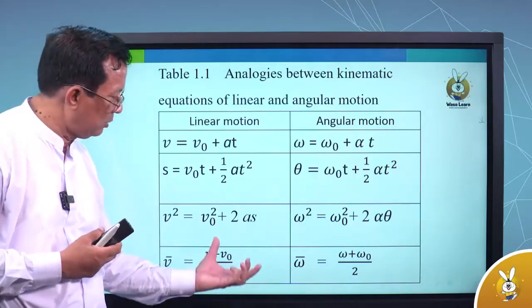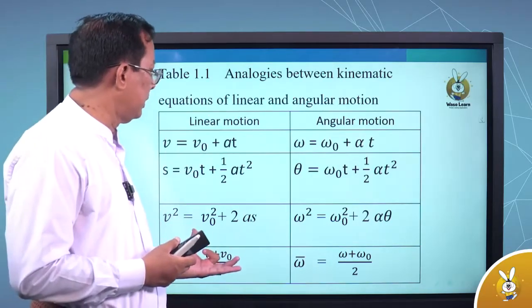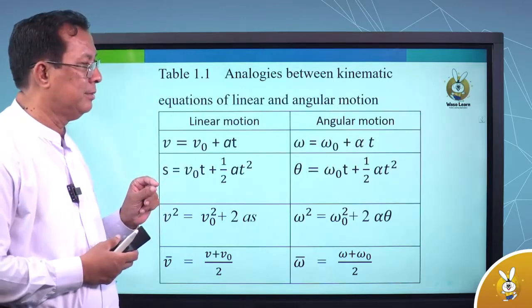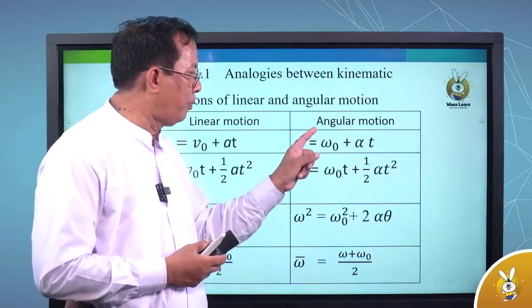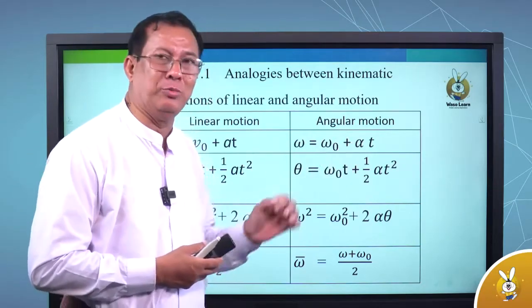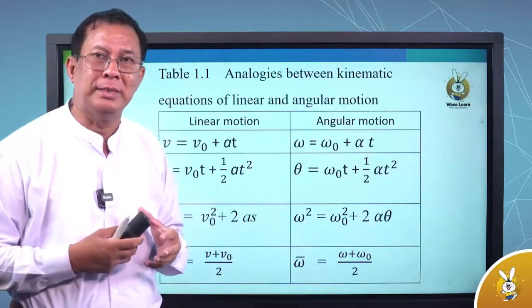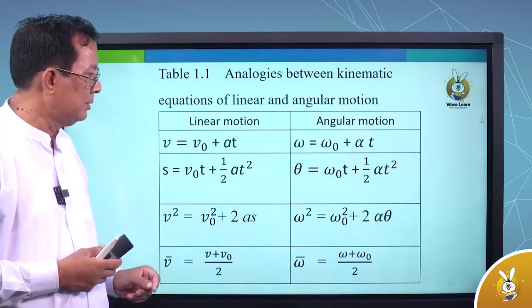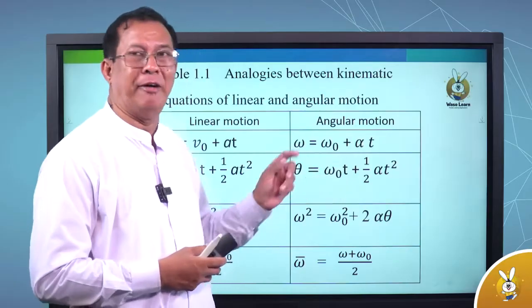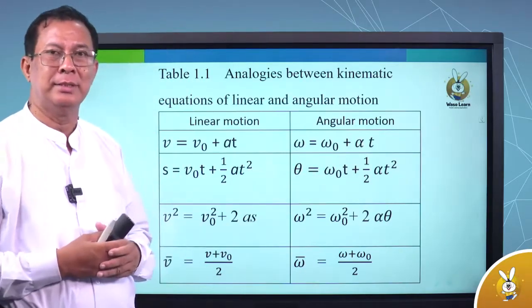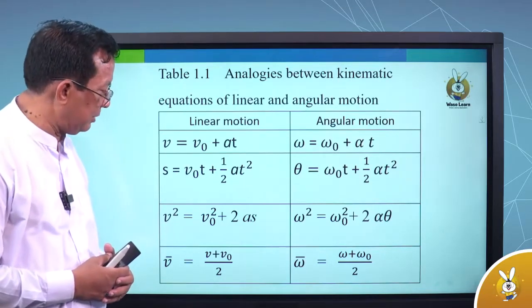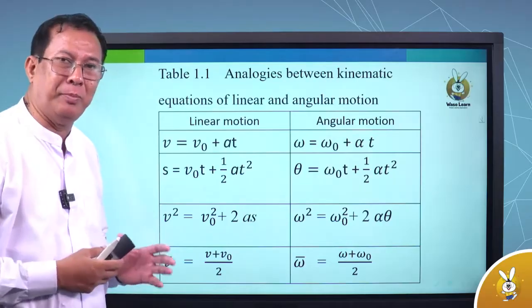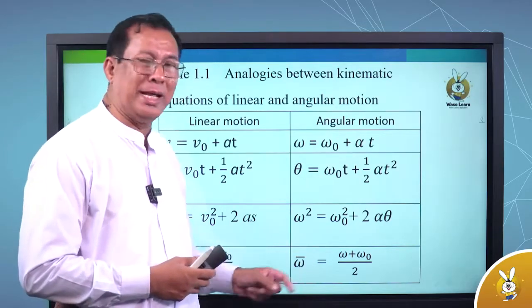You can write the equation in the same way. Analogic equation is the same. Linear motion and angular motion is the same. For linear motion: V equal to V-naught plus at. For angular motion: omega equal to omega-naught plus alpha t. S equal to V-naught t plus half a t squared. Theta equal to omega-naught t plus half alpha t squared. V squared equal to V-naught squared plus 2as. Omega squared equal to omega-naught squared plus 2 alpha theta. V-bar equal to V plus V-naught by 2. Omega-bar equal to omega plus omega-naught by 2.